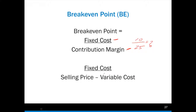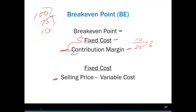But notice — here's a case where you have a formula within a formula. Think about what makes up contribution margin: it's the selling price less the variable cost. So if I was given a selling price of $100, a variable cost of $75, and fixed costs of $10, and told to calculate the break-even point, I can't just use the formula directly, because I was not given the contribution margin — I need to calculate it first.